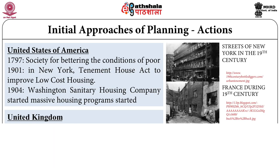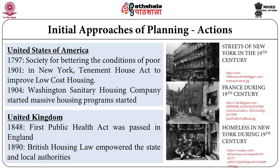In the United States, as early as 1797, a society for bettering housing conditions for the poor was formed, followed by the Tenement House Act to improve local housing, and the Washington Sanitary Housing Company which started massive housing programmes. In the United Kingdom, in 1848, the first Public Health Act was passed, followed by the British Housing Law which empowered state and local authorities. These reforms were backed by legislation, and when compliance became mandatory, changes started to come through policies and plans.